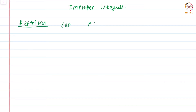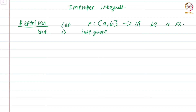Let f from the open interval (A, B) to ℝ be a function that is integrable on the closed interval [C, B] for all C in the open interval (A, B). So you are given a function defined on a one-sided interval where the point A is not in the interval. However, when you take any point C in the open interval (A, B) and restrict f to the closed interval [C, B], you end up with an integrable function.